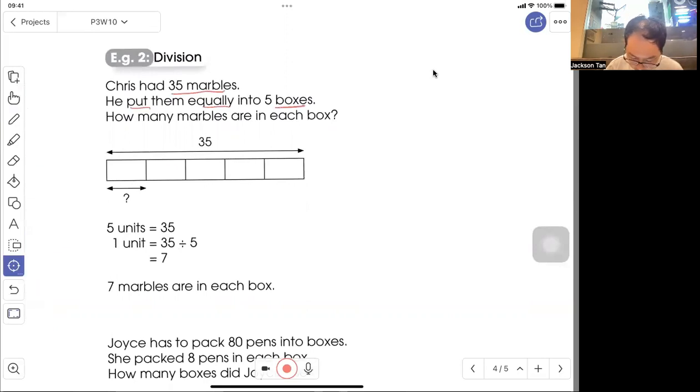So one, two, three, four, five, total thirty-five, question mark for one box. So five units is thirty-five. One unit will be thirty-five divided by five equals seven. So there are seven marbles in each box.